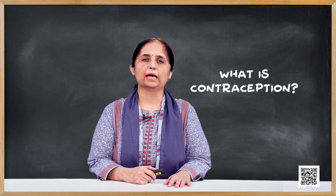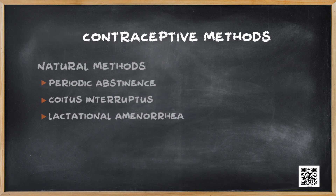So, what is contraception? Contraception can be simply defined as the use of artificial methods and techniques to prevent a pregnancy. Many different kinds of contraceptive methods are presently available.